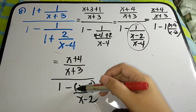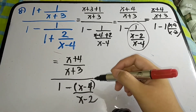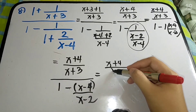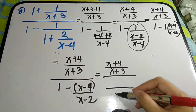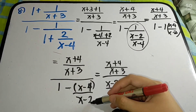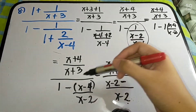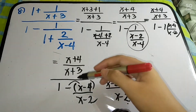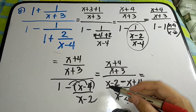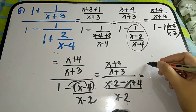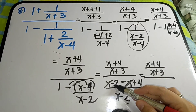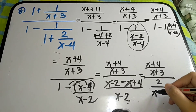So we now have 1 minus (x−4)/(x−2) inside the denominator. Use LCD of (x minus 2): (x−2) times 1 is (x−2), minus (x−2)/(x−2) is 1 times (x−4) gives (x−4). Distribute the negative: negative x and negative times negative 4 is positive 4. So x minus x cancels to 0, leaving negative 2 plus 4 which is positive 2. Denominator becomes 2 over (x minus 2).